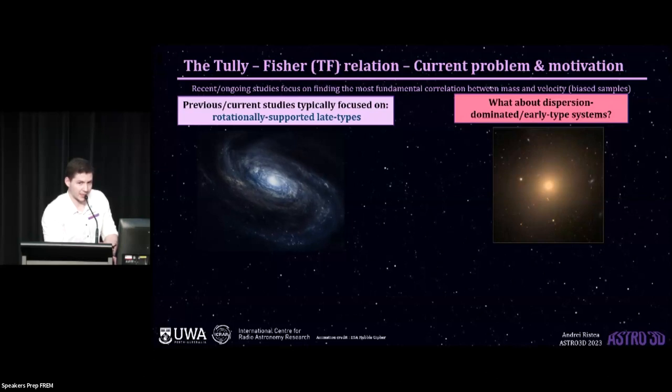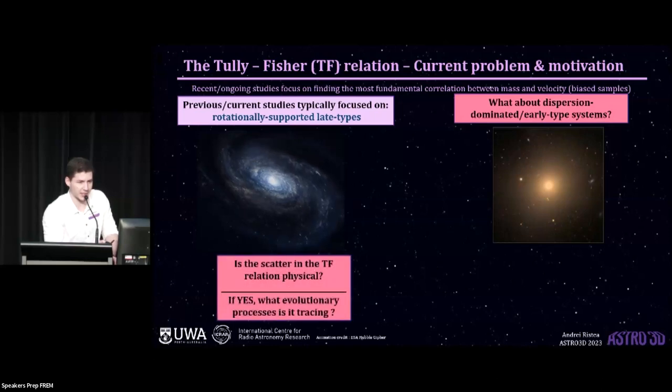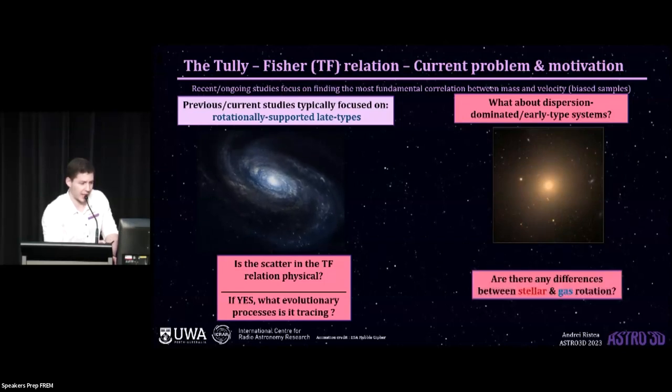Now, this is something that I've tried to improve upon in my work by constructing a sample of galaxies which is representative in optical and kinematic morphology. And with this sample, the main questions that I've addressed were whether or not the scatter in the Tully-Fisher has any physical meaning, and if so, what physical processes is it tracing, and whether or not the stellar and gas rotation are tracing different Tully-Fisher relations.